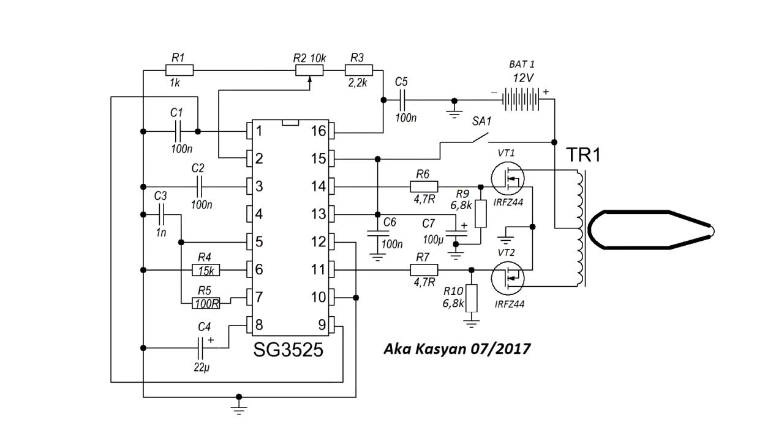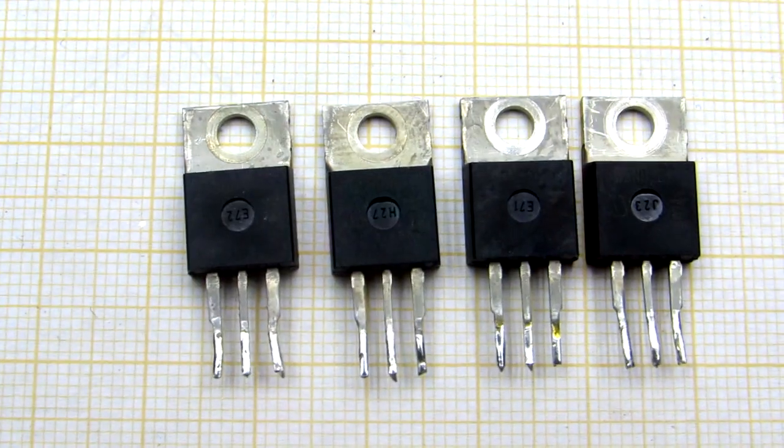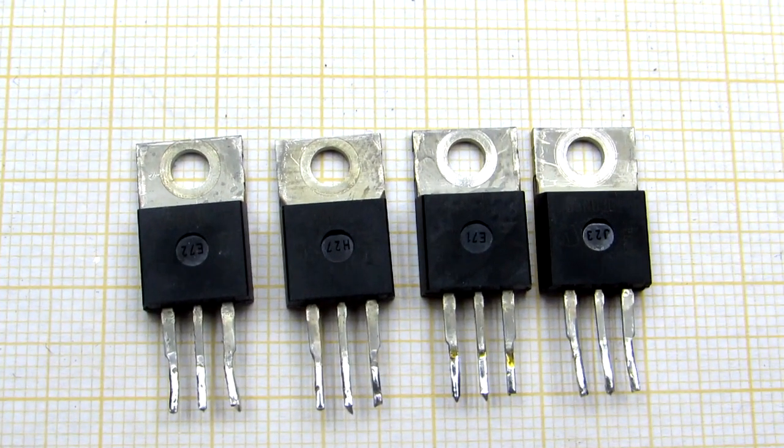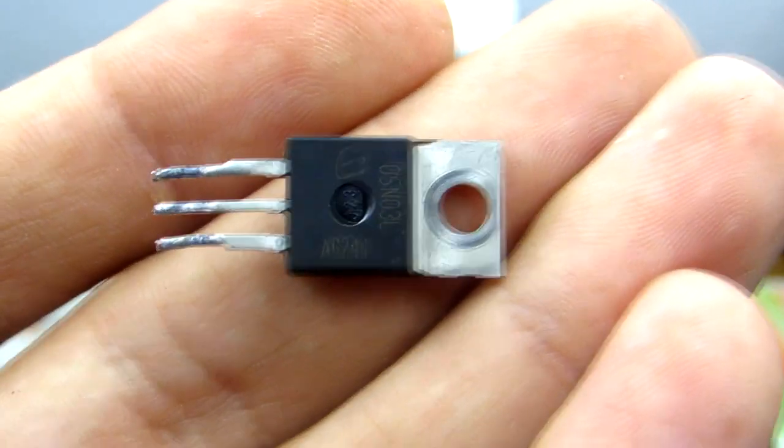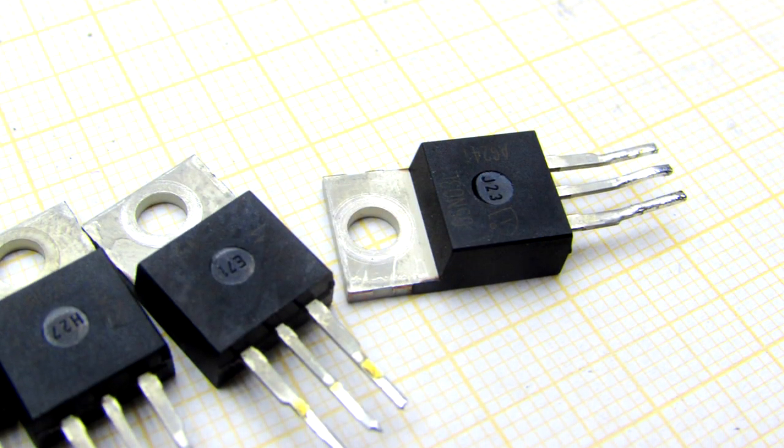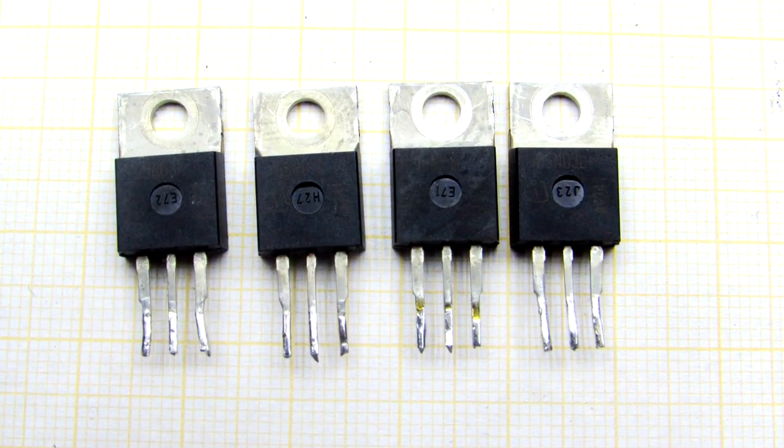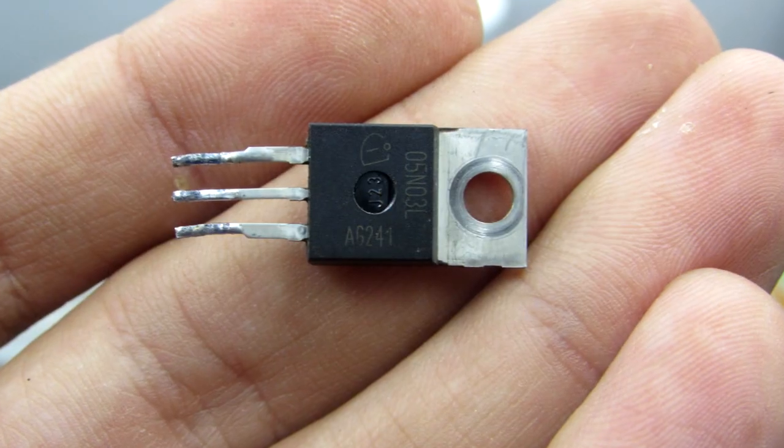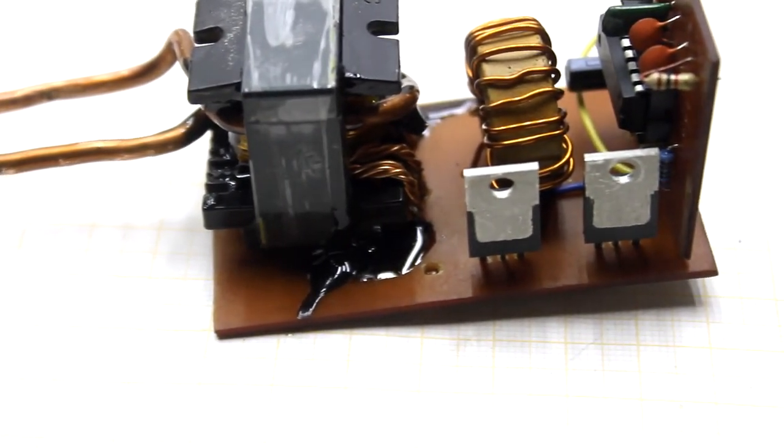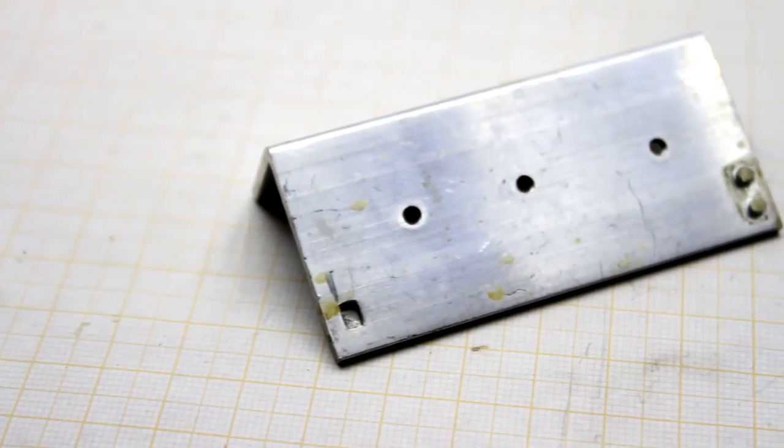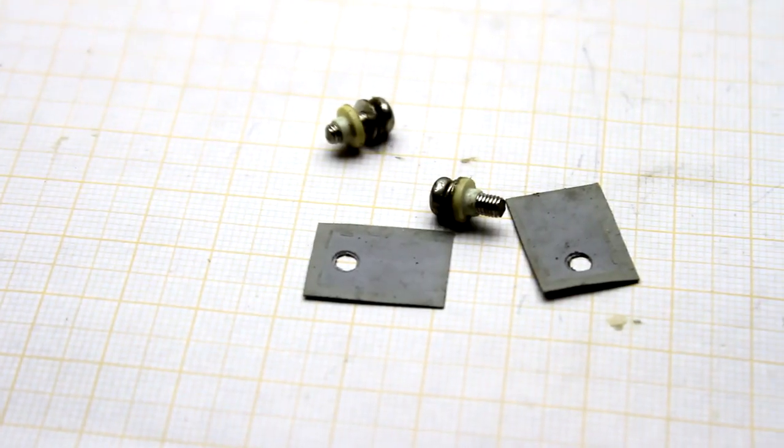The power of the converter will depend on the field effect transistors and overall power of the transformer. It's easy obtaining 100 to 150 watts with traditional FETs similar to IRFZ44. You can use any N-channel transistors with a voltage of 30 volts. The current is preferably more than 40 Amperes. By the way, FETs are installed on a common heat sink. Don't forget to use insulating gaskets.